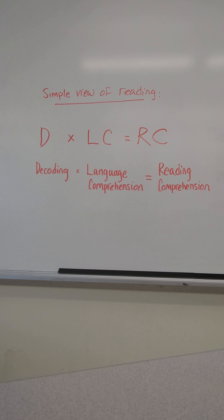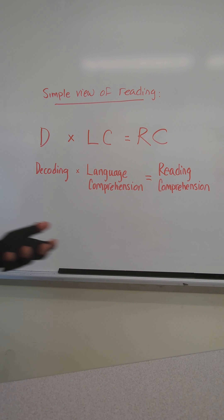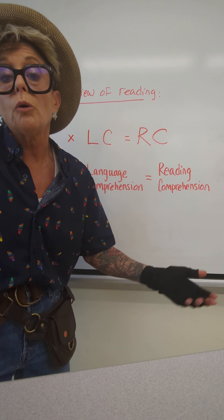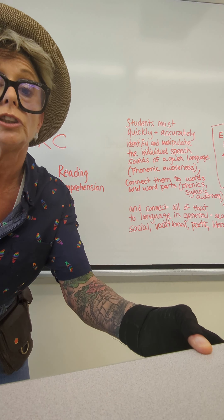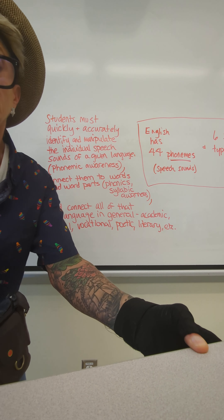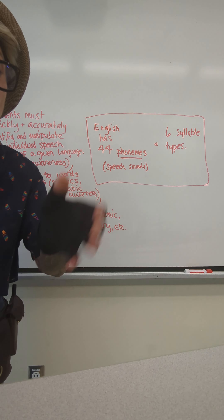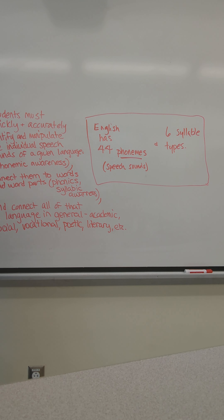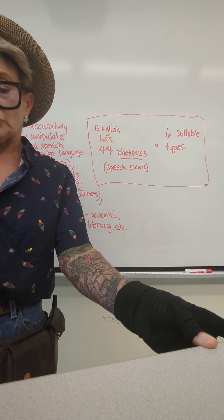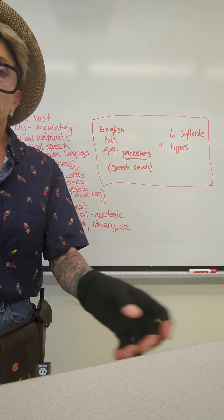Without decoding and language comprehension skills being strong, reading comprehension — which is the gold standard — is what we want. We want our students to be able to understand a hundred percent of what they read in our disciplines. Not ninety-eight percent, not fifty-eight percent — a hundred percent.